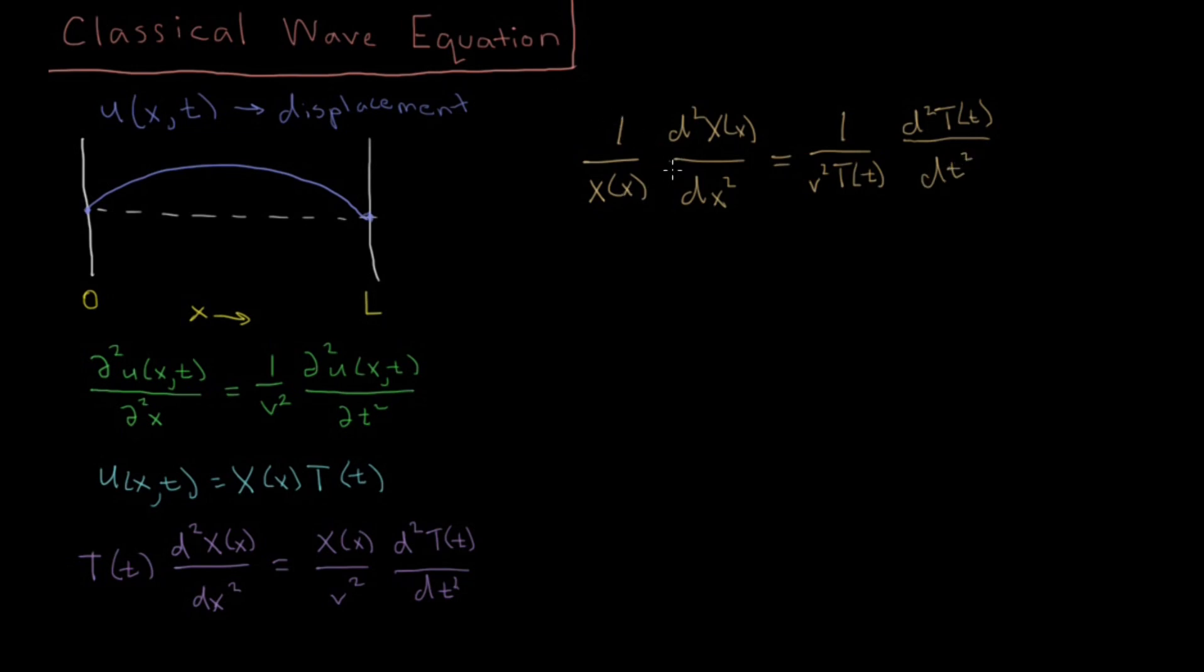Now it's important to note that we've got a function here which varies in space, and we've got a function here which varies in time. And they have to be equal to each other at all instances of space and time. So we can vary time independently, and that's not going to change the x value, so this side has to stay the same. And we can vary time, and we can similarly do the vice versa. So while these are varying, the other side has to stay the same. So the only way this can actually be true is if both of these sides are equal to some constant.